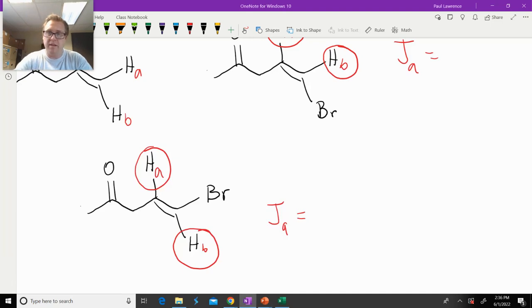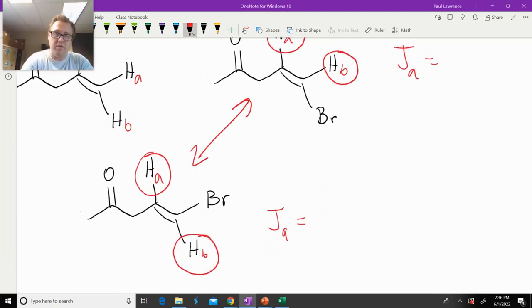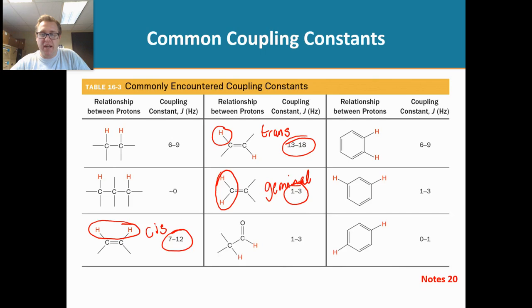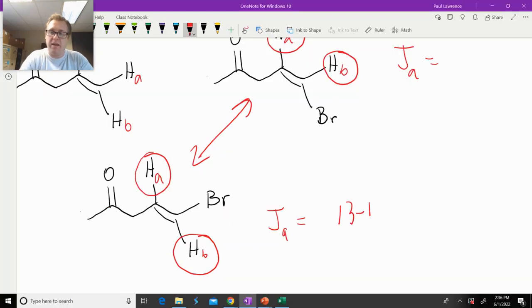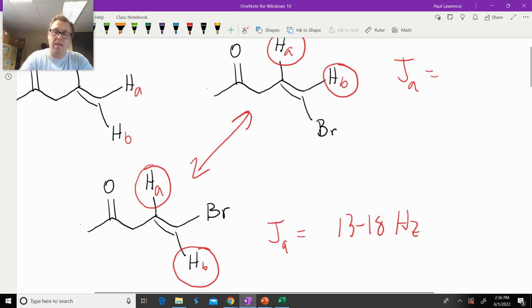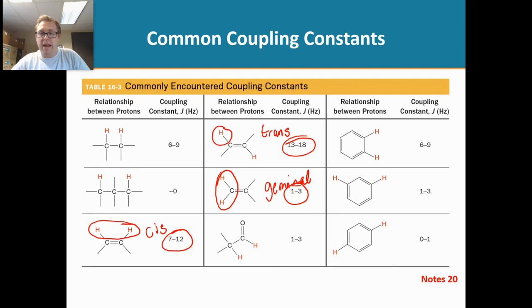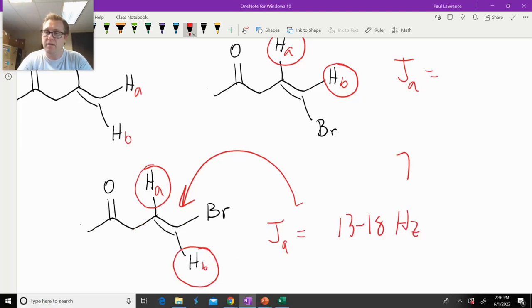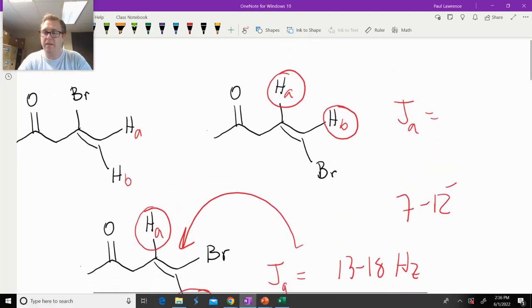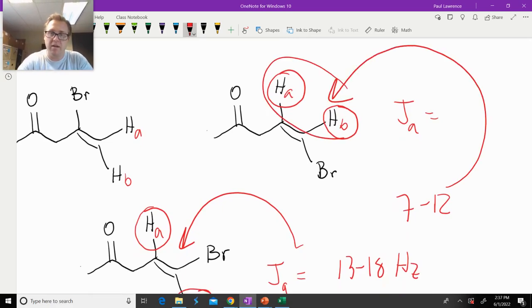So when we go and look at these two molecules right here, between these two, how can we tell which one we have? By looking at the J-coupling constant. If we have a J-coupling constant of 13 to 18 hertz, then what do we have? It's going to be this molecule right here because the protons are trans. But if we had a J-coupling constant of 7 to 12, which molecule would we have? It would be this one because those protons are cis to one another. Isn't that so cool?